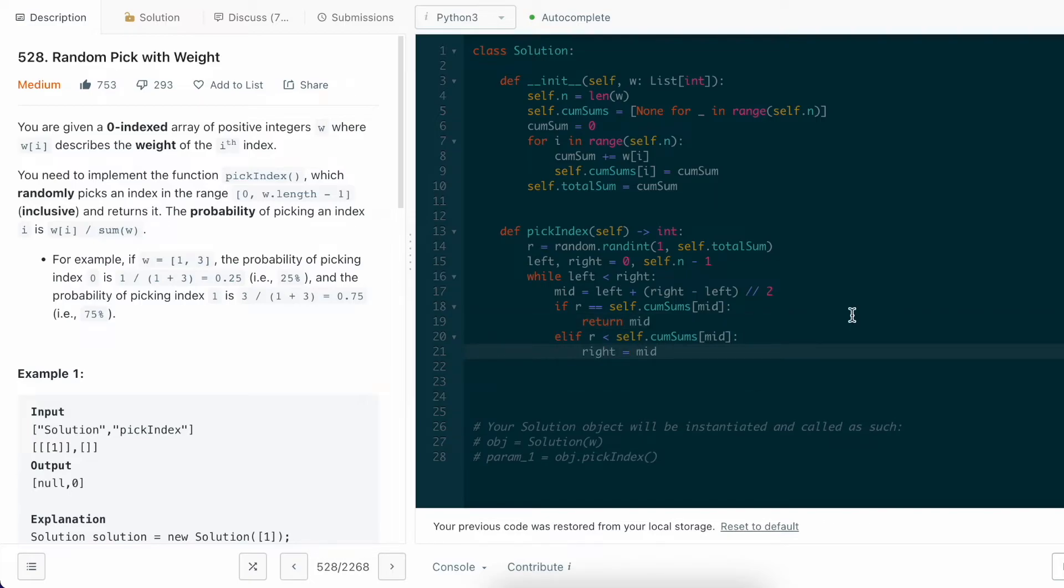The second scenario is if this randomly picked r is less than our cumulative sum at mid. In that case, we cannot declare that right is equal to mid minus 1, but we have to say that right is equal to mid. Because as the cumulative sum of an index is the upper bound for what it could be, there could be a scenario where r is supposed to be within the range of mid, but mid is just the upper bound and r is not. So, we write right is equal to mid, not right is equal to mid minus 1.